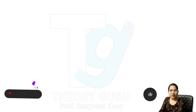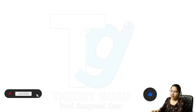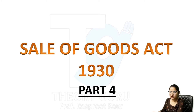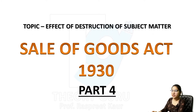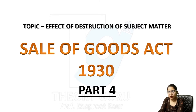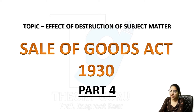Hey guys, welcome to my channel. Theory Guru, Professor Aspitkaur here. Today we are going to discuss the topic Sale of Goods Act 1930, Part 4. In this part we are going to discuss about effects of destruction of subject matter. Previous video में हमने discuss किया कि subject matter क्या होता है — goods form the subject matter of the contract of sale. इस video में बात करेंगे कि जब goods destroy हो जाएं तो उसका क्या effect पड़ेगा।